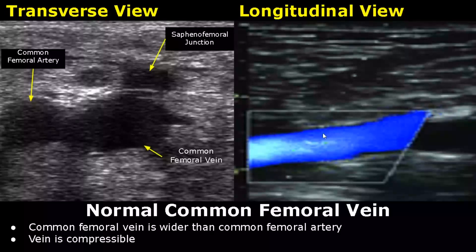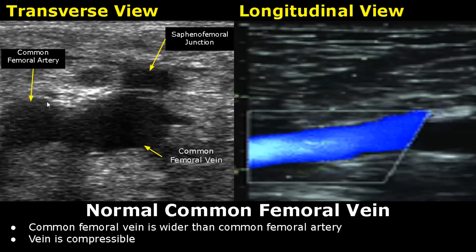We have transverse and longitudinal images of the common femoral vein. Here it is seen alongside the common femoral artery and the saphenofemoral junction in cross-section. The common femoral vein is wider than the artery and it will be compressible when we apply pressure with the probe.